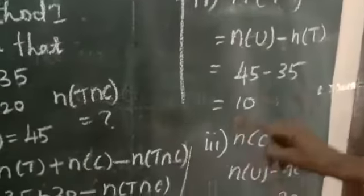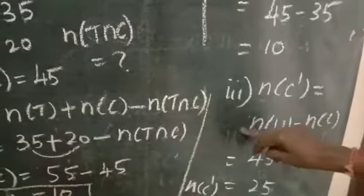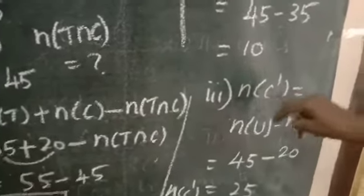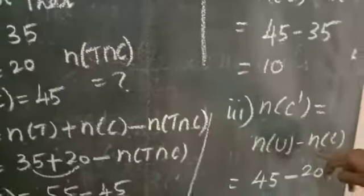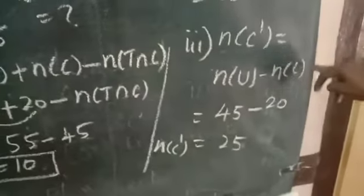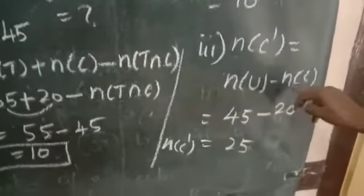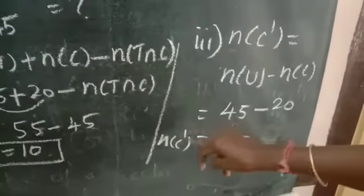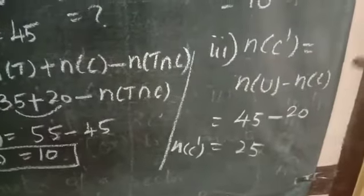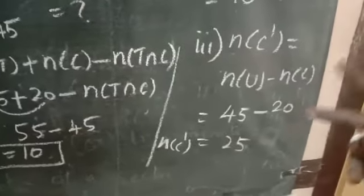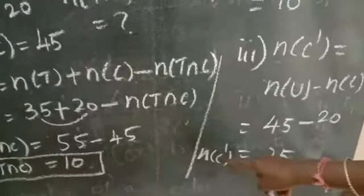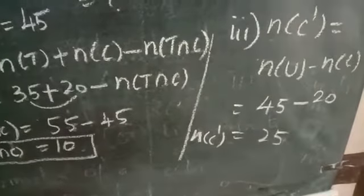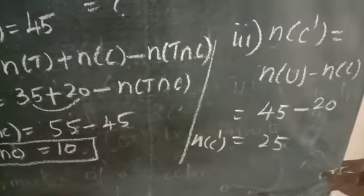Third, find those who do not like coffee — that means N of C dash. You subtract the total number of coffee likers from the total number of people in the party. So N of U is 45 and N of C is 20. So 45 minus 20 equals 25. Therefore N of C dash is equal to 25. So N of T dash is 10 and N of C dash is 25.